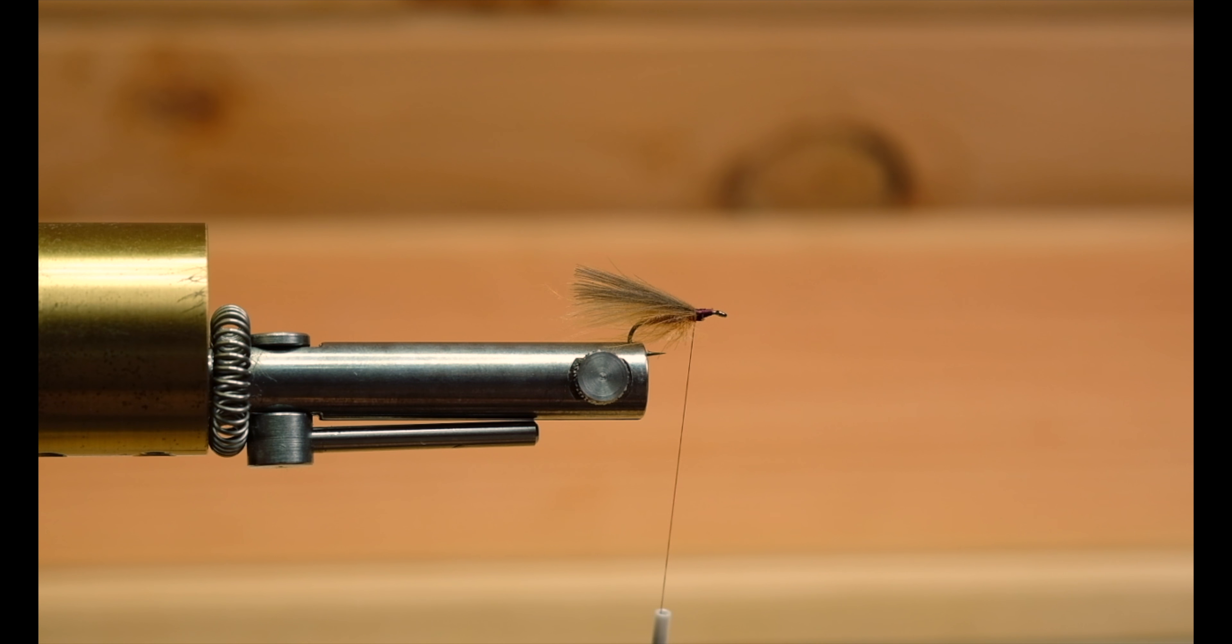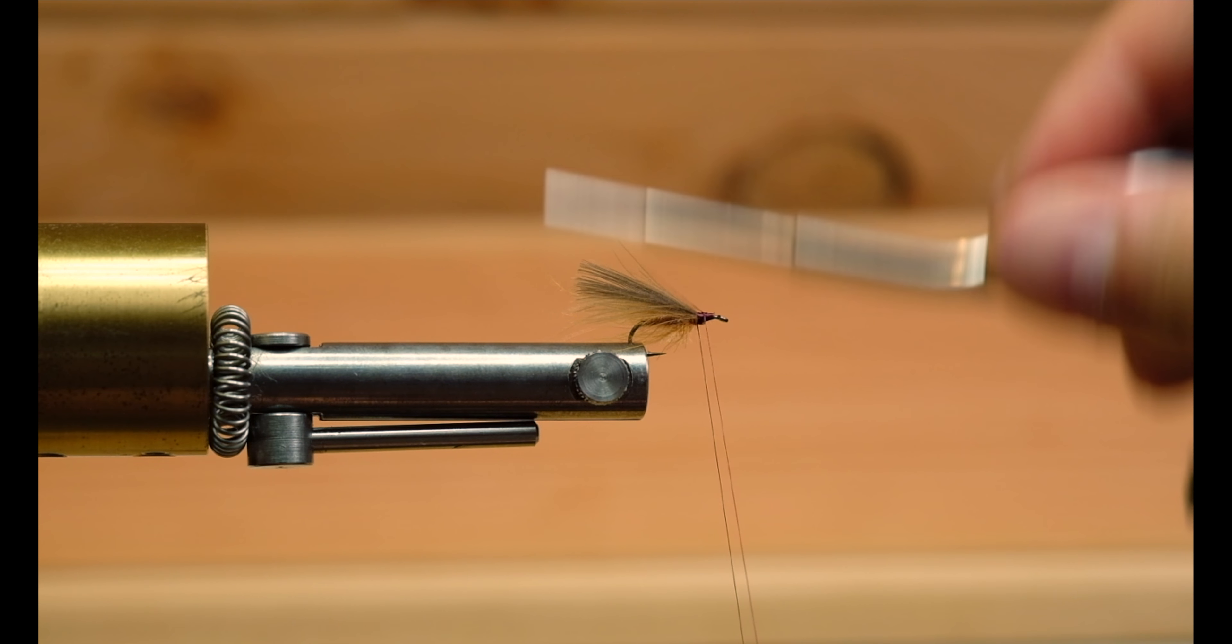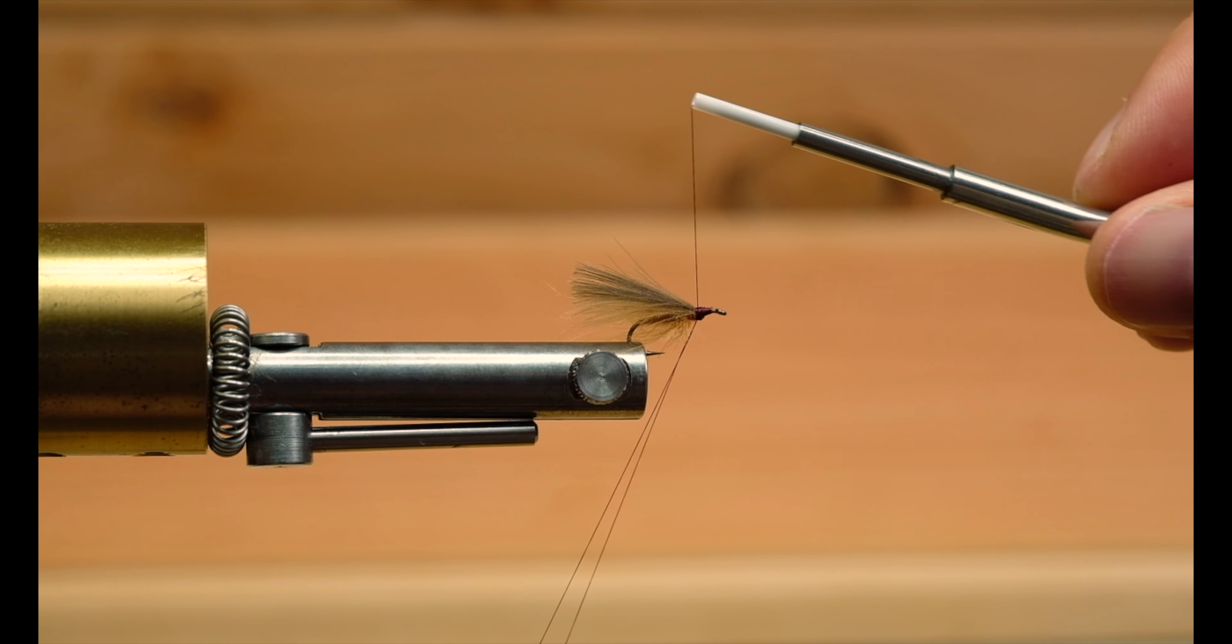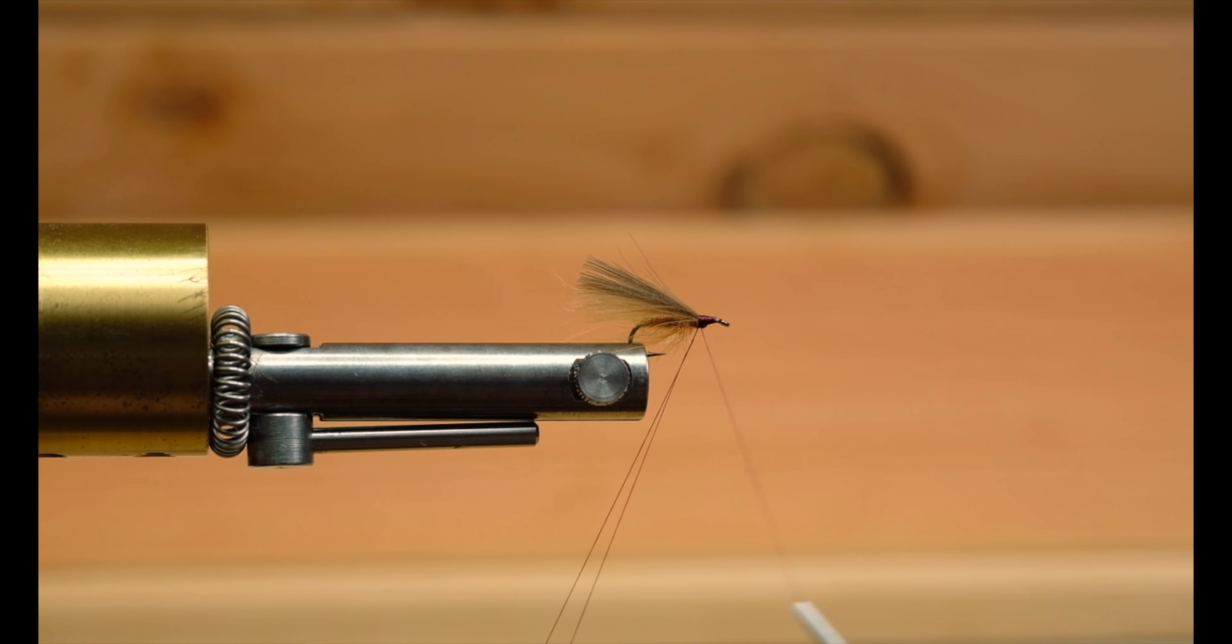Now we have the body and the wing. For the thorax, I'll be using a dubbing loop. Just create a little loop here, one or two times around, tie it down.